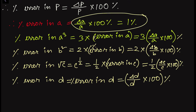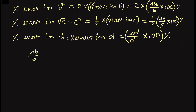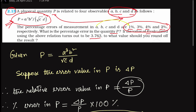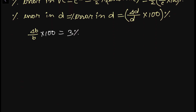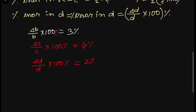From the question: delta A by A into 100 is 1%; delta B by B into 100 is 3%; delta C by C into 100 is 4%; and delta D by D into 100 is 2%. These are the given percentage errors in the observable quantities.